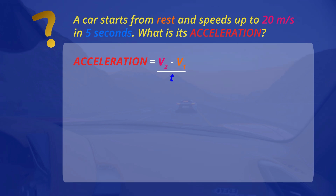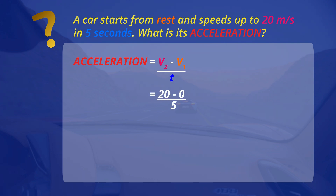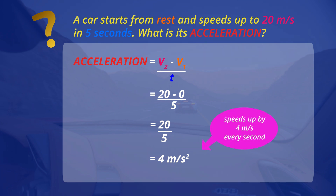Acceleration is the difference between V2, that's the second velocity, and V1, that's the first velocity, divided by the time it takes to speed up. So 20 minus zero is divided by 5. That's 20 divided by 5, or 4 metres per second squared. That means that the car is speeding up by 4 metres per second for every second that it travels — about 14 kilometres per hour every second.